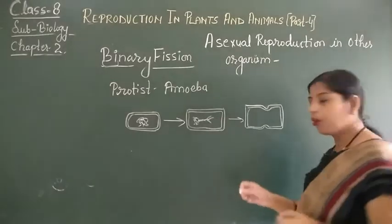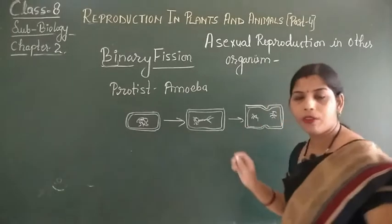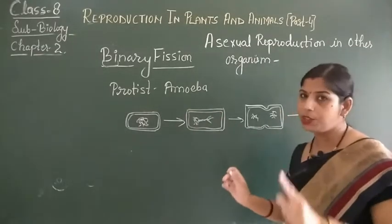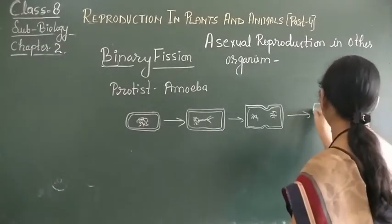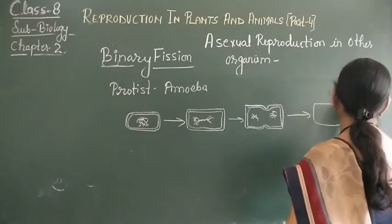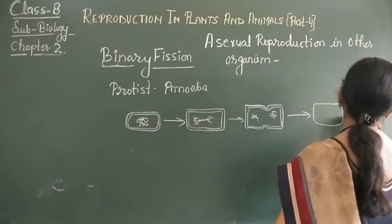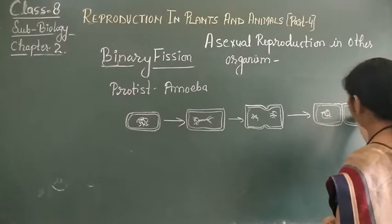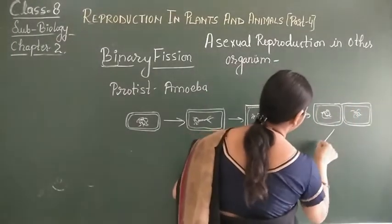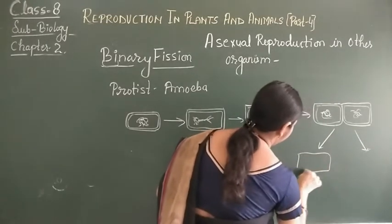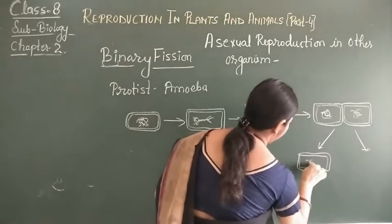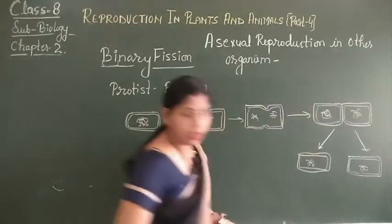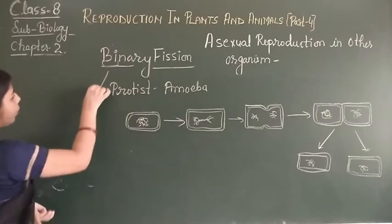The nuclear material is now separated. First the nucleus divides, and then after that the cytoplasm divides. So first the nucleus divides, then the cytoplasm divides, and these give rise to two daughter cells. Binary fission takes place during the favourable condition.